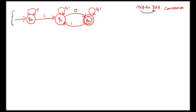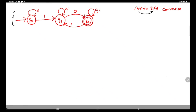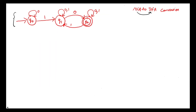First of all, let us see whether the given automata is a DFA or NFA. We'll start from the initial state and check with all the input alphabets. If there is only one next state for each and every state with each and every input alphabet, then we say that the given diagram is a DFA; otherwise it is known as an NFA.